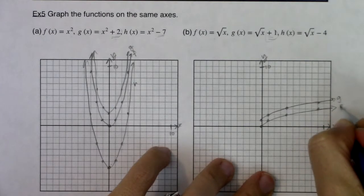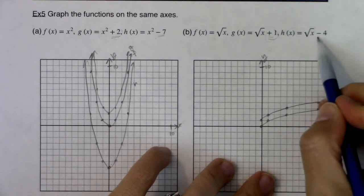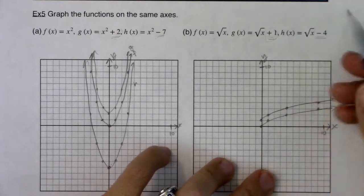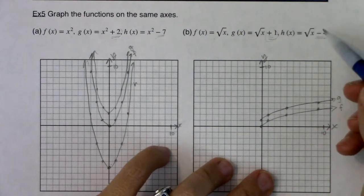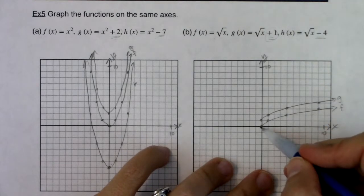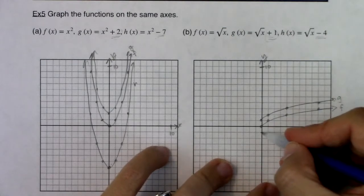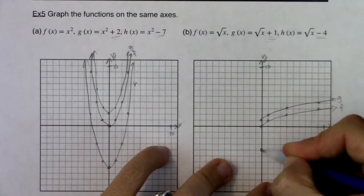Here I see a square root of x minus four. Again, the minus four, it's outside the grouping symbol, or in this case, outside of the square root. So I'm going to move everything down four units. So I'm going to go one, two, three, four, right? One, two, three, four.